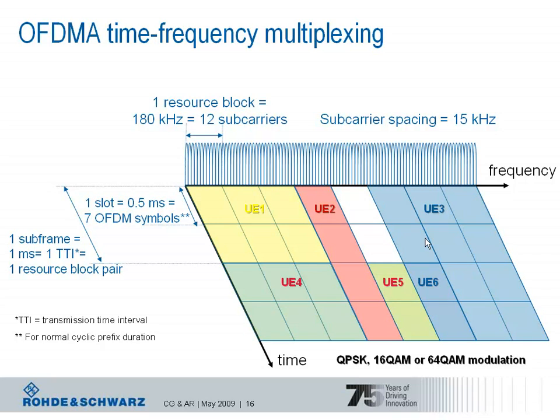Each UE can transmit with a different modulation scheme. Depending on the radio link quality for each UE, either a more robust scheme like QPSK or a more sensitive scheme like 64QAM can be assigned.